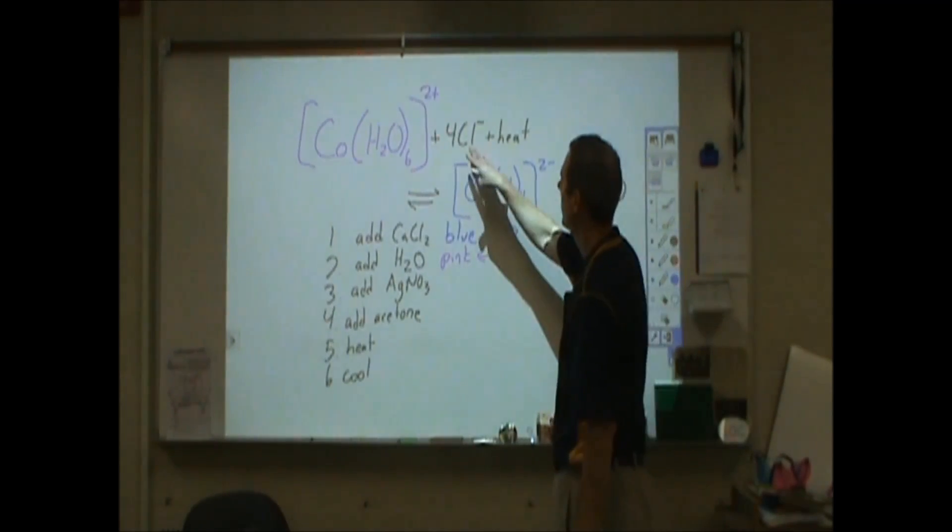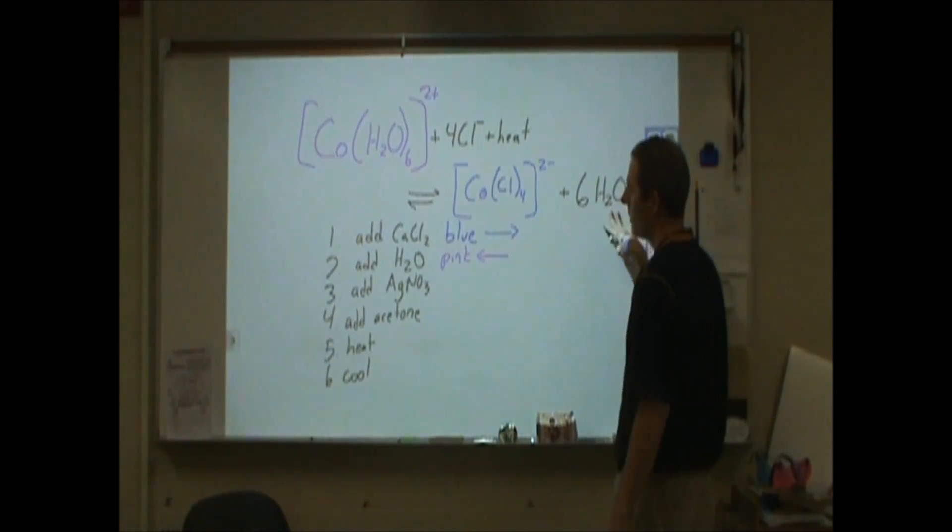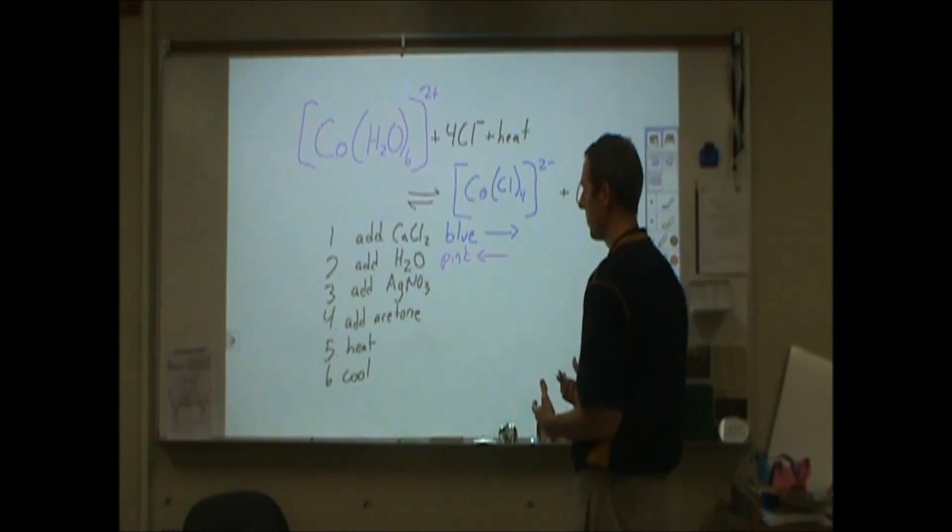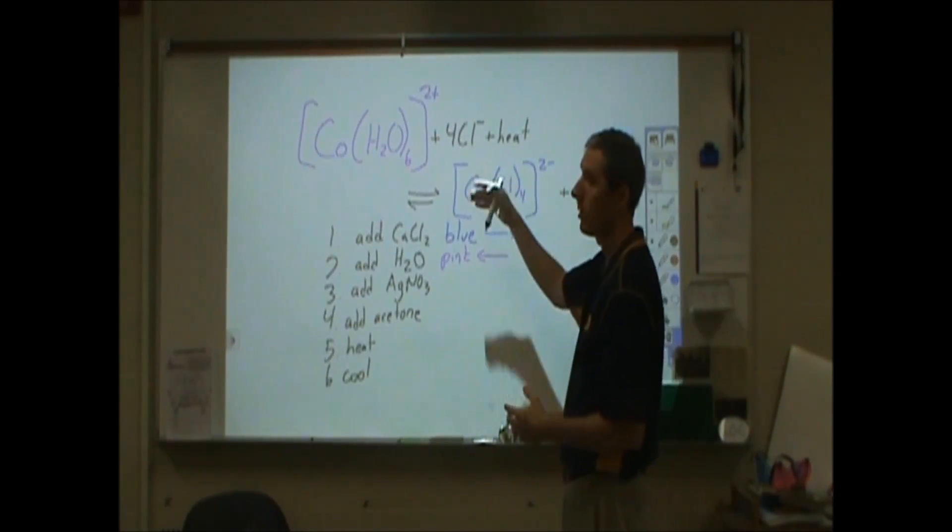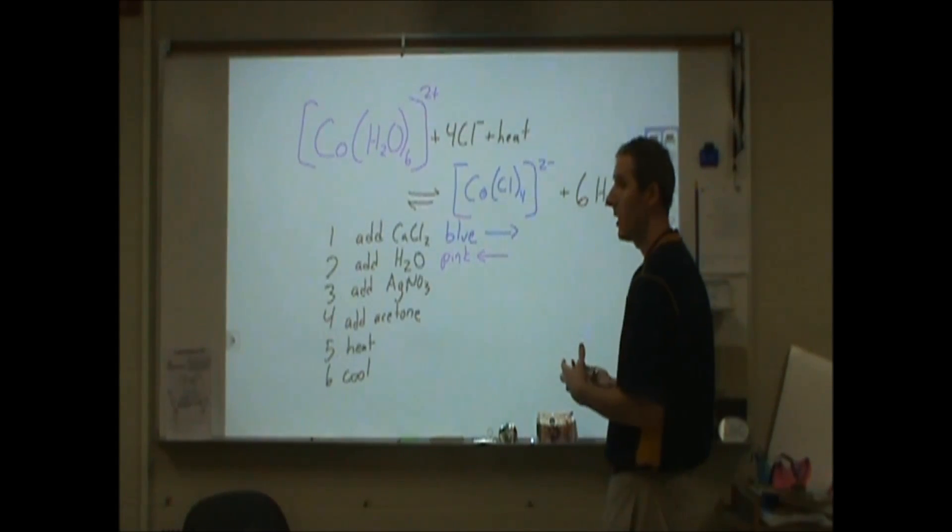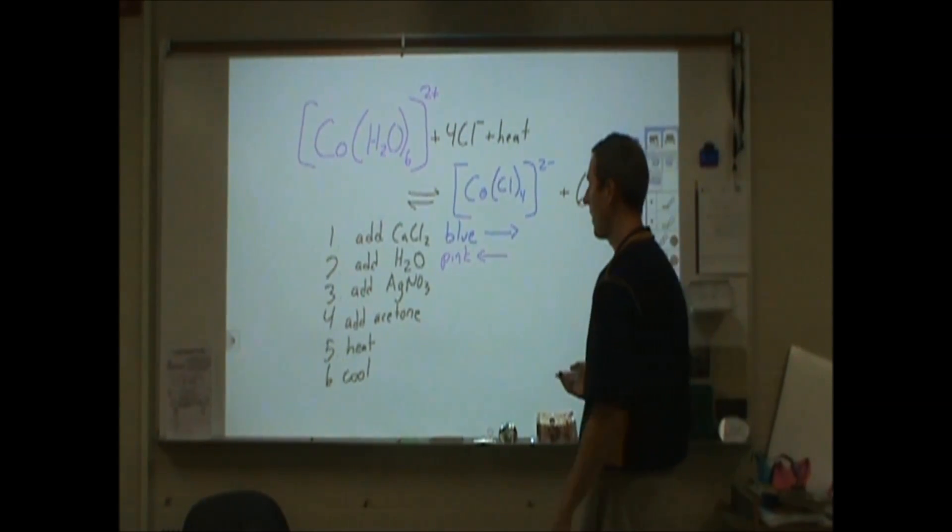Whether that's due to the chloride concentration decreasing or the actual water itself participating in the reaction, I don't know. I know that water usually gets left out in equilibrium situations because water is a liquid and so its concentration really hasn't changed much. To make this mixture though, I had used ethanol to dissolve the cobalt chloride. So it wasn't an aqueous solution. Again, that may affect it.